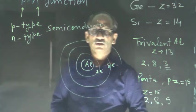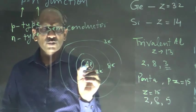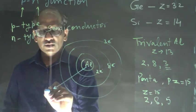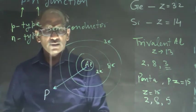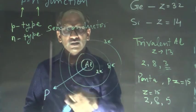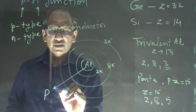So in case of phosphorus, instead of this aluminum, if I consider phosphorus, then in the third shell there will be five electrons.